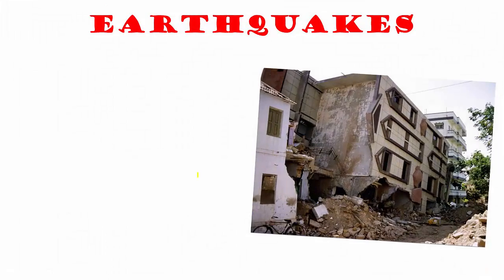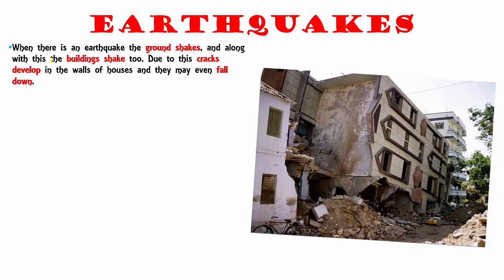When there is an earthquake, the ground shakes. Along with the ground, the buildings also shake. Because of this, there could be cracks that develop along the walls of houses, and the entire house itself may fall down. For example, a major earthquake that happened in India was the Gujarat earthquake of 2001.